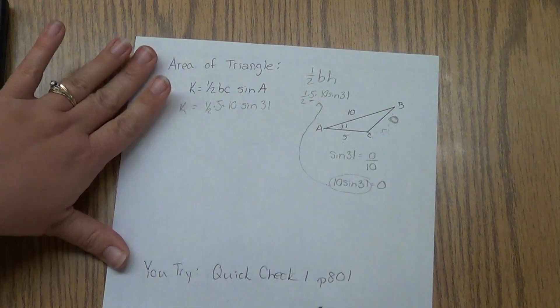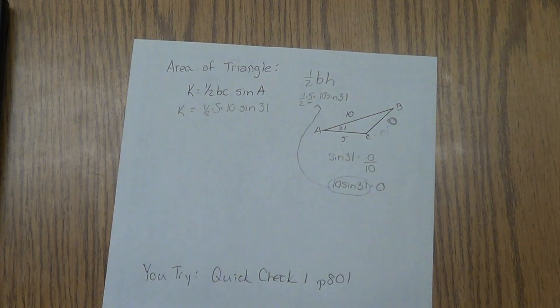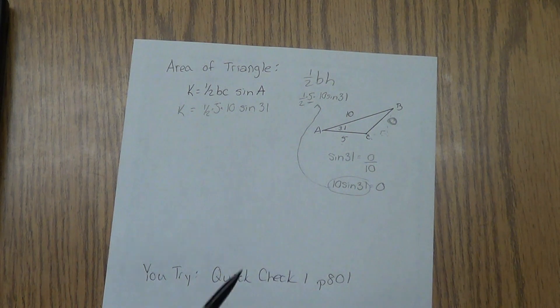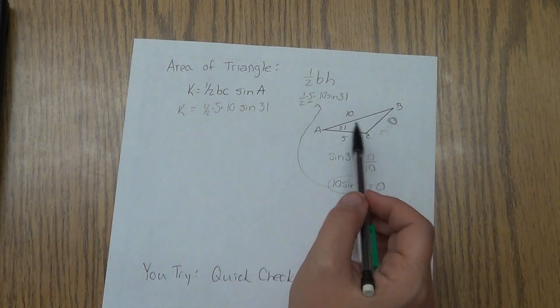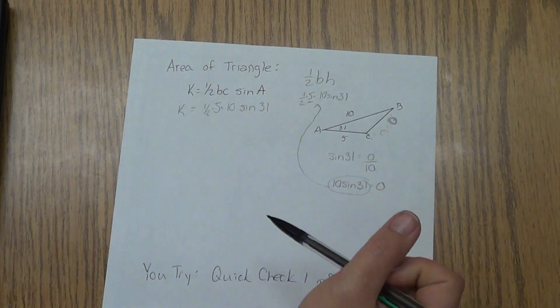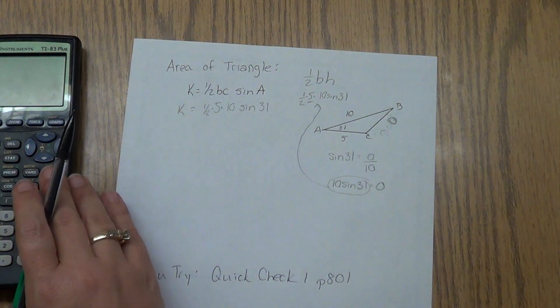So here's the moral of the story. If you forget to memorize that formula or if you get stuck and you can't remember it, then you could always go back to, all right, I need to find the height of my triangle, use my trig to find the height, and you would end up there anyway. But if you know the formula, it makes your life much easier.